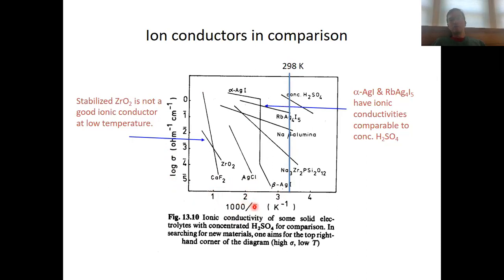A value of 3 would mean about 300 Kelvin, so temperature increases from right to left on this plot. Conductivity increases exponentially, and these numbers are in the exponent, so they represent an order of magnitude.